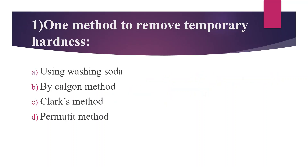First Question: One method to remove temporary hardness. Option A: Using Washing Soda. Option B: By Calgon method. Option C: Clark's method. Option D: Permutit method. Answer is Option C, Clark's method. Clark's method uses Calcium Hydroxide to remove temporary hardness from water.